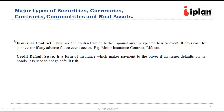Let us look at another kind of contract such as insurance contract and credit default swap. Insurance contracts are used as a hedge against any unexpected loss or event. If there is any adverse event which occurs, the investor will be paid a lump sum amount which is determined in advance. Examples could be motor insurance, life insurance, etc.